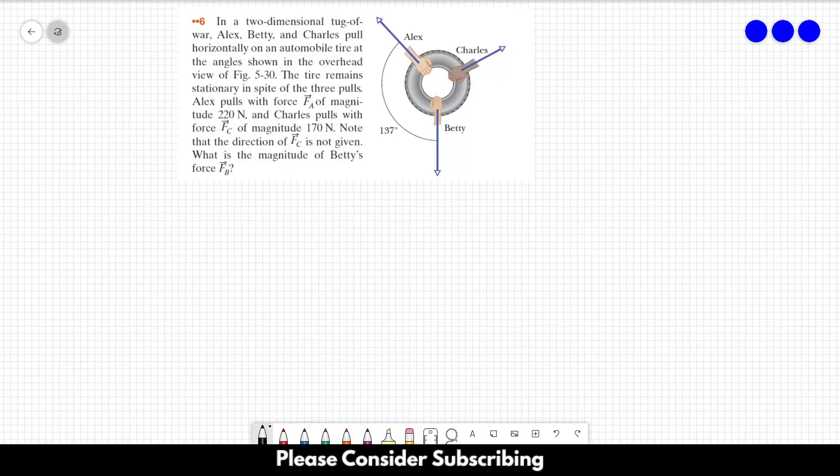Number 6. In a two-dimensional tug-of-war, Alex, Beth, and Charles pull horizontally on an automobile tire at the angles shown in the overhead view of this figure. The tire remains stationary in spite of the three pulls. Alex pulls with a force of magnitude 220 N and Charles pulls with a force of magnitude 170 N. Note that the direction of FC is not given. What is the magnitude of Beth's force FB?